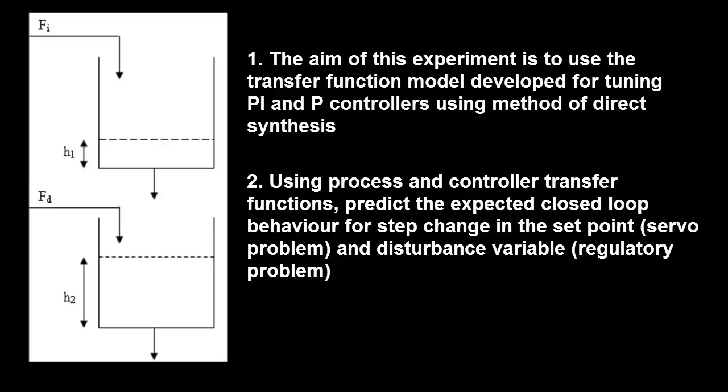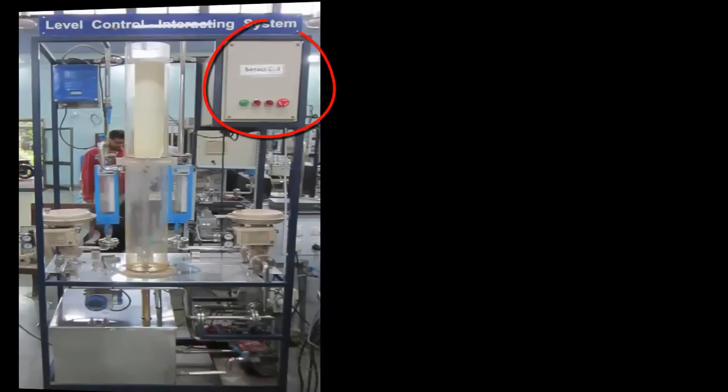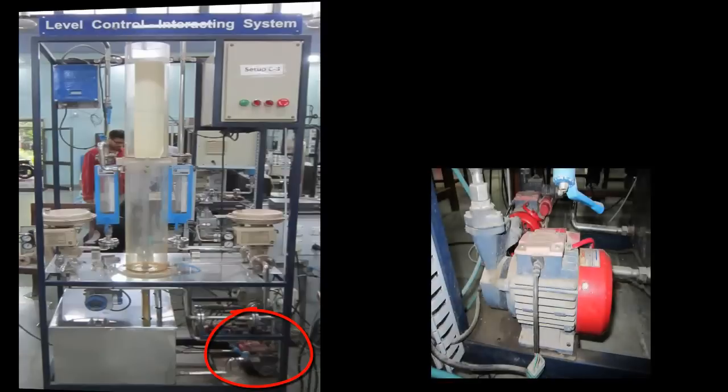Let us now take a look at the setup that you will be using. On the top right hand corner is the power box and the controller knobs for the system. At the bottom of the setup is a red colored centrifugal pump which pressurizes water. The flow of water into the tanks is controlled by the pneumatic control valves which we will look at later.